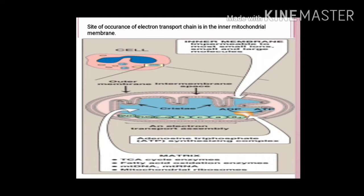Let's begin with the site of electron transport chain, which occurs in the inner mitochondrial membrane. It is a double membrane organelle. The outer membrane is permeable to most ions and small and large molecules, but the inner mitochondrial membrane is impermeable to most small and large molecules. The blue portion is the matrix, where TCA cycle enzymes, fatty acid oxidation enzymes, mitochondrial DNA, RNA, and ribosomes are present. Glycolysis occurs in the cytosol, TCA cycle in the matrix, and electron transport chain in the inner mitochondrial membrane.